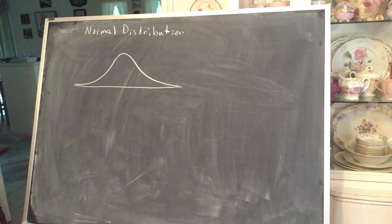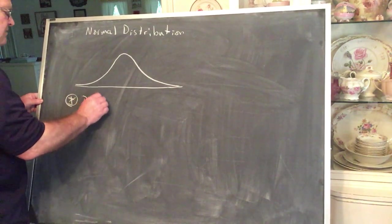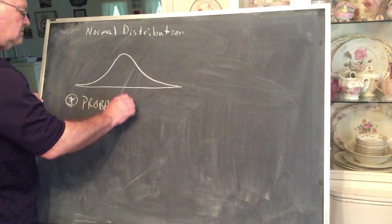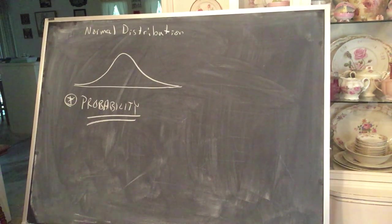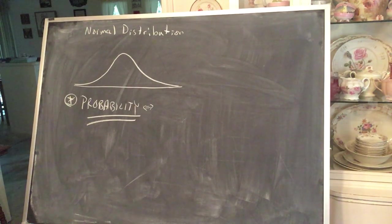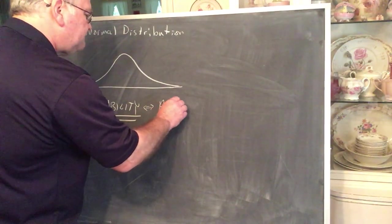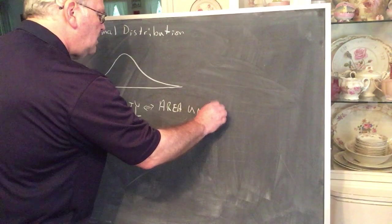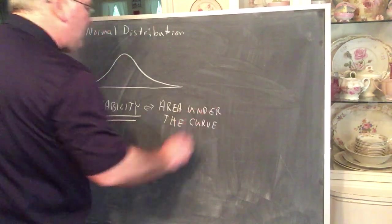There are certain facts about the normal distribution that come into play. One of the key ideas is probability. We use this curve to find the probability of values in a population. Our definition of probability now becomes the overriding definition for all the probability we're going to be finding: probability is defined to be area under the curve.